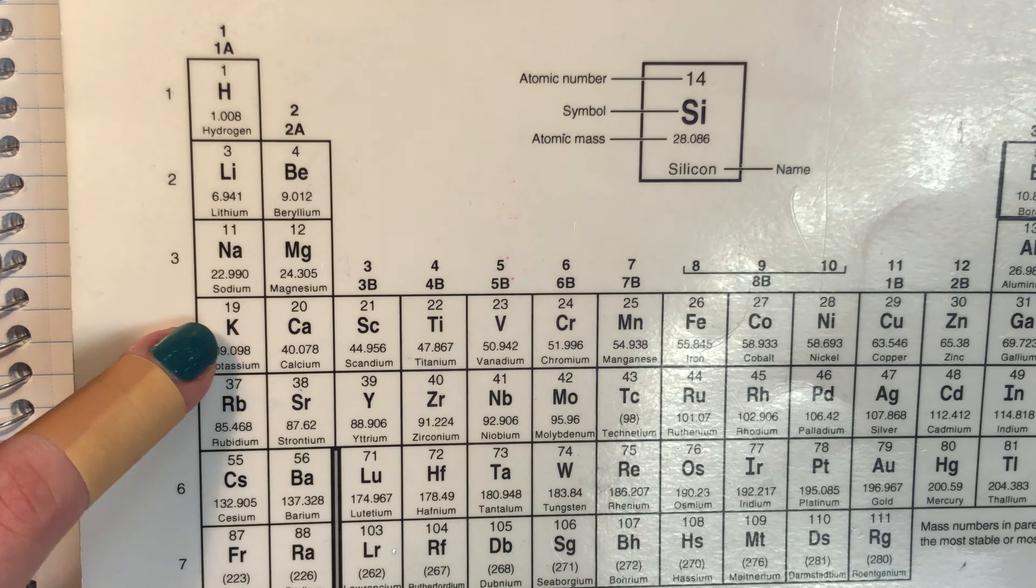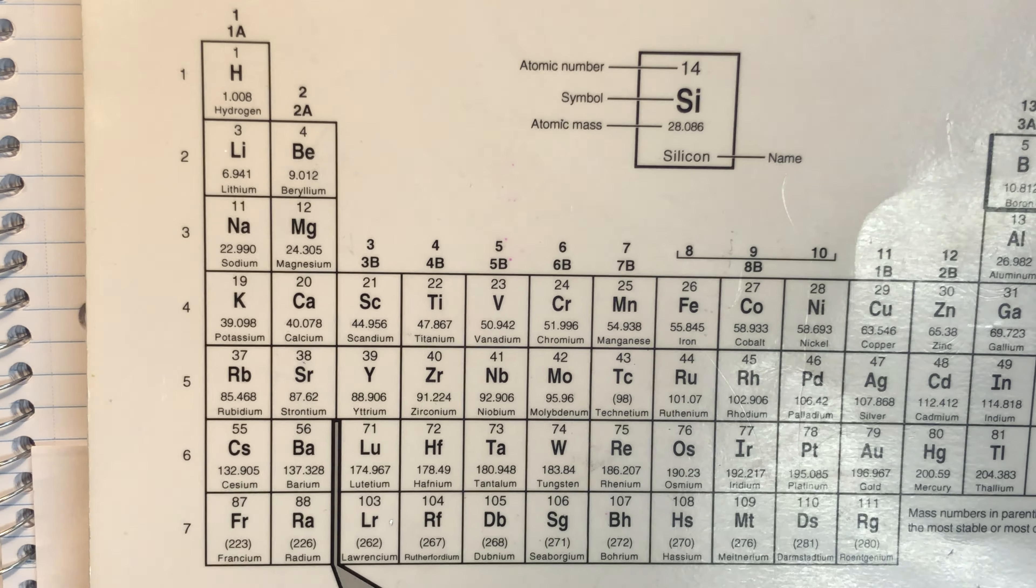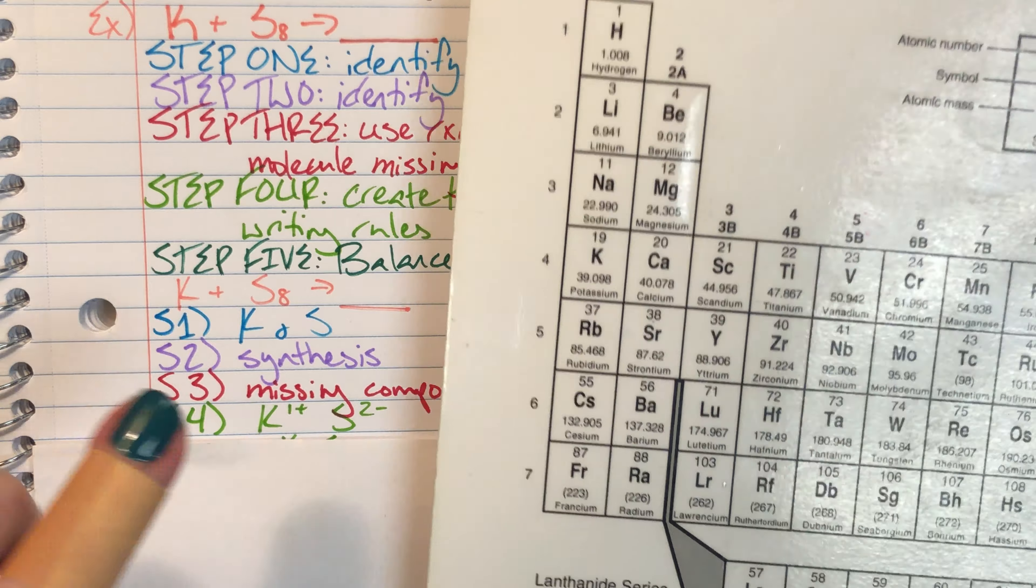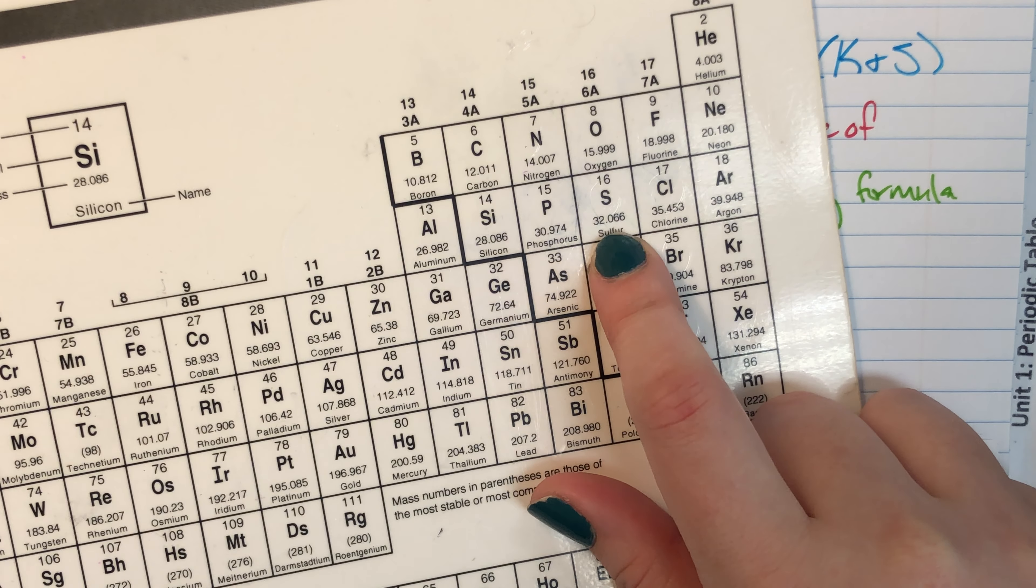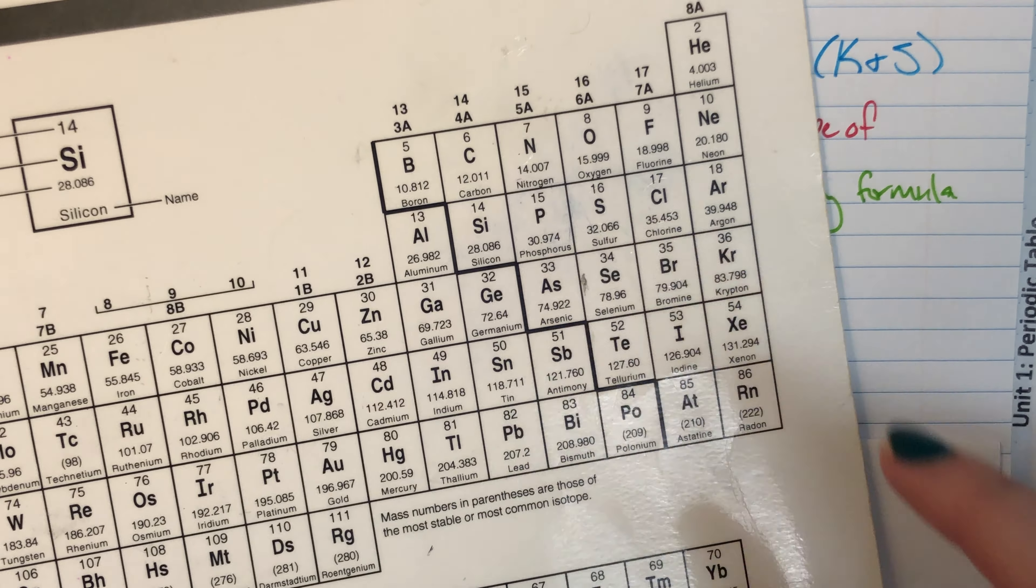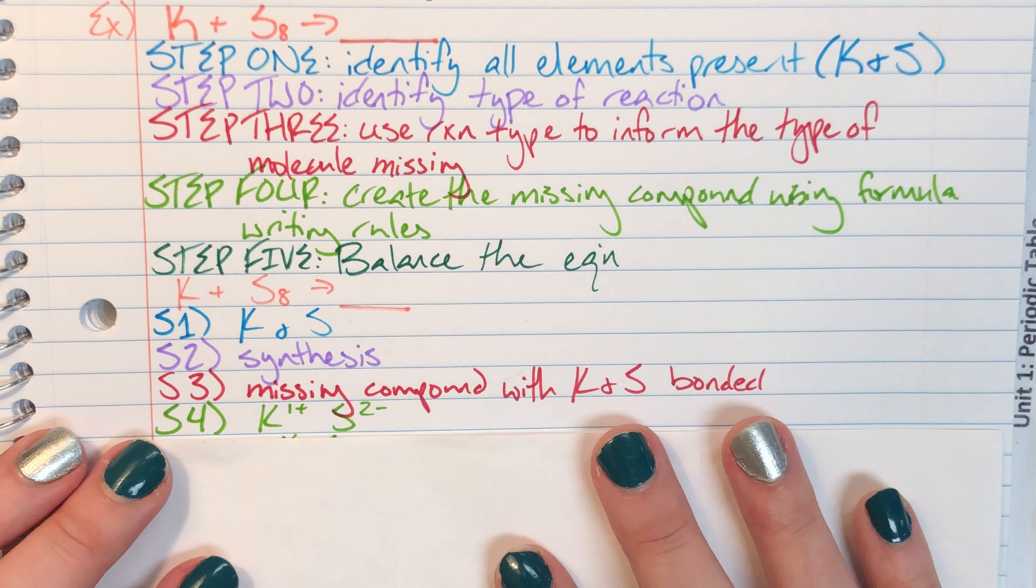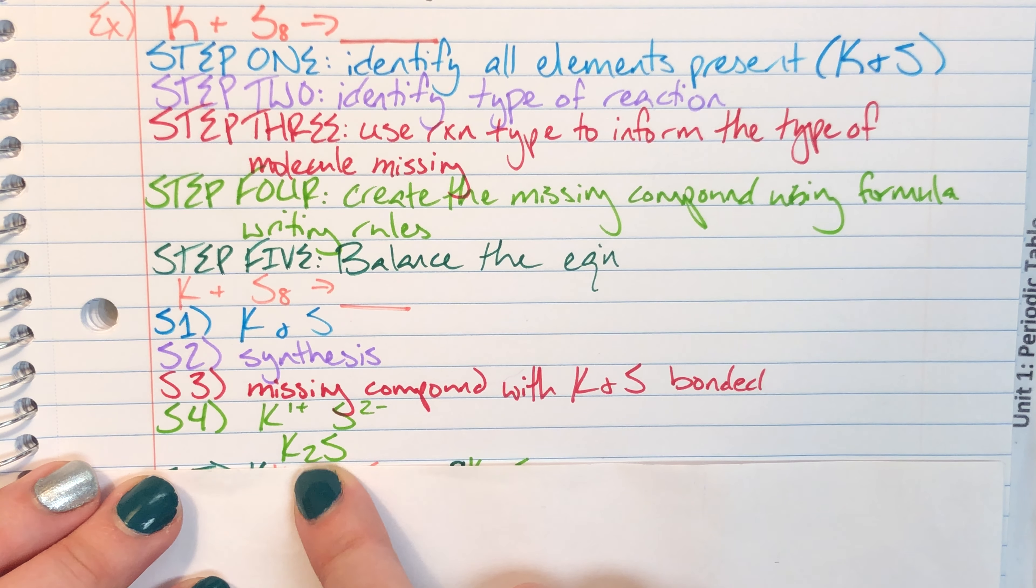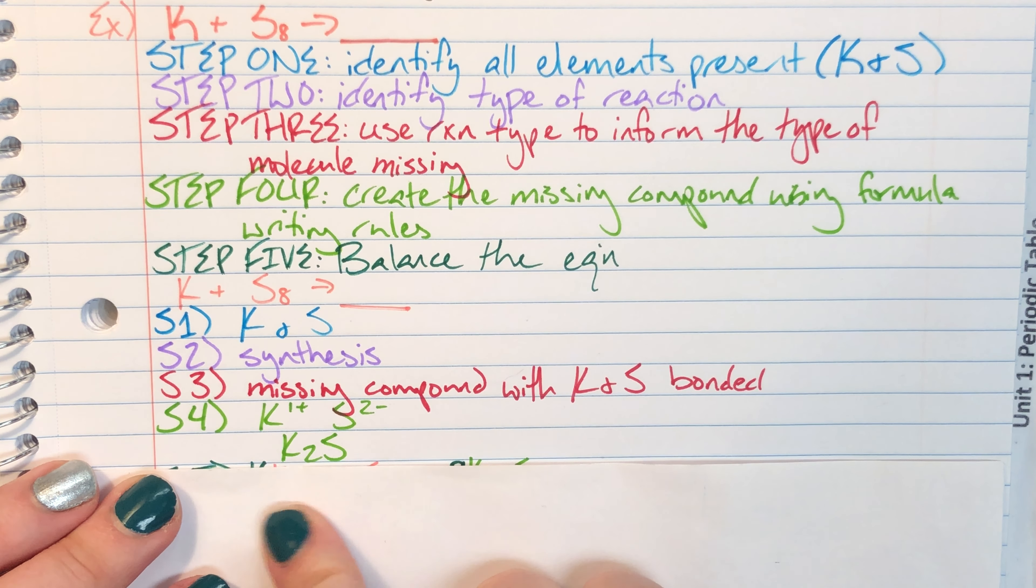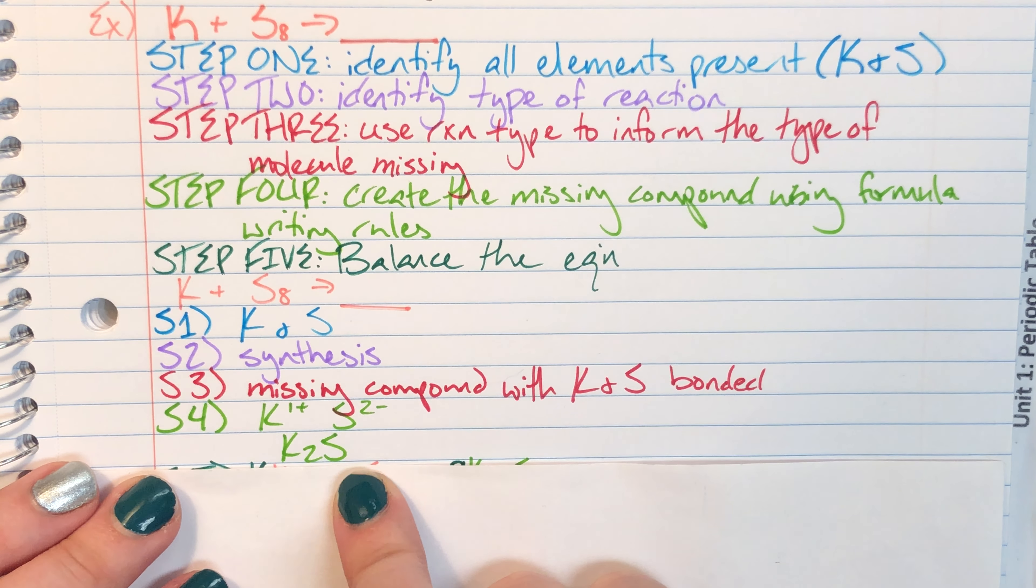Potassium is in column one which means it has one valence electron so it's gonna have a charge of positive one. Sulfur is in column six which means it has six valence electrons so it's going to have a charge of negative two. And then I will go ahead and switch charges for subscripts to come up with my actual compound formula, so K2S.